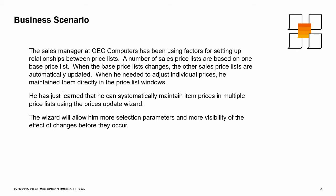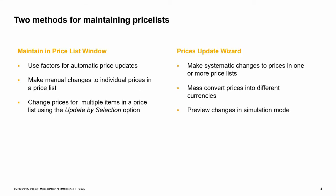There are two methods for maintaining prices in your price lists. The first method is to maintain prices directly in the price list window. As we saw in the previous lesson, you can use factors for automatic price updates. You also have the option to make manual changes to individual prices within the price lists. You can open the entire price list to update items, or change prices for multiple items within one price list by using the update by selection option.